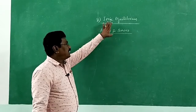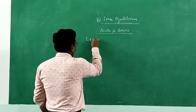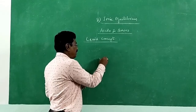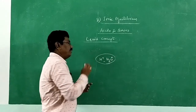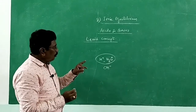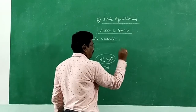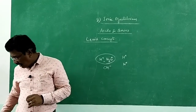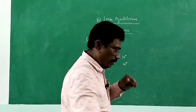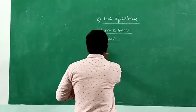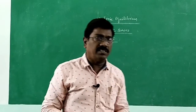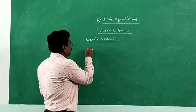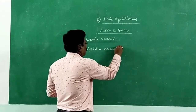Now, the acid-base concept according to Lewis. In Arrhenius, we were thinking of hydrogen ion or hydronium ion — acid can give hydronium ion or hydrogen ion; base can give hydroxide ion. In Lowry-Bronsted, proton donor is acid, proton acceptor is base. But in Lewis concept, we don't mention anything about hydrogen ion or hydroxide ion. The concept deals with electron pair only. The species which can donate an electron pair to some other substance is said to be a base; the acceptor is an acid.